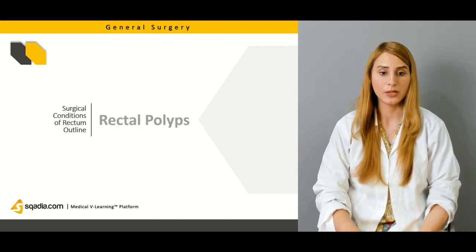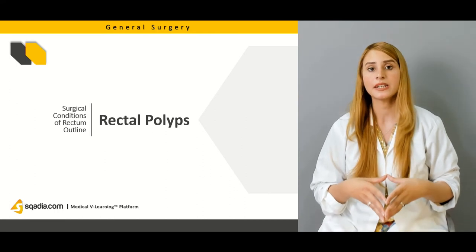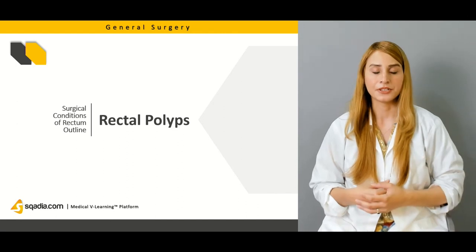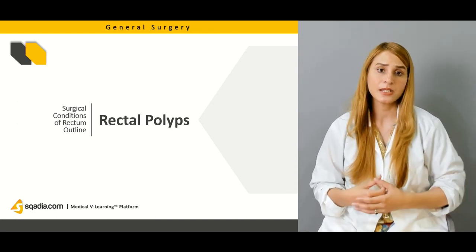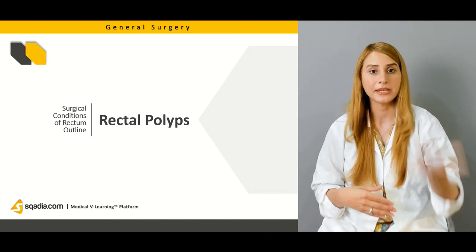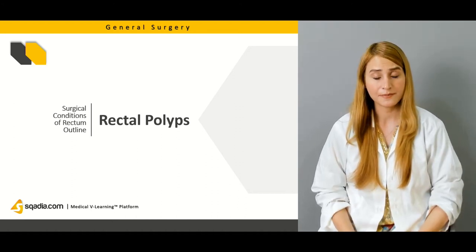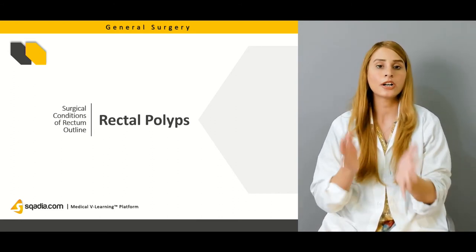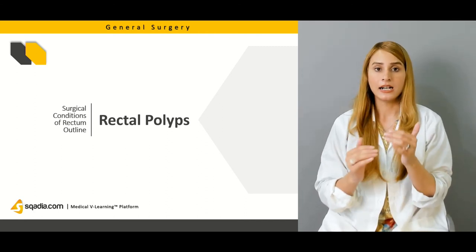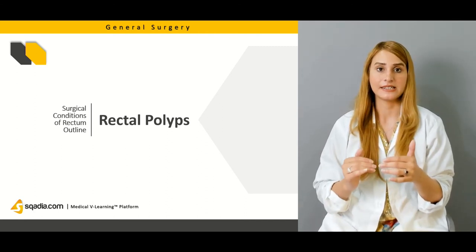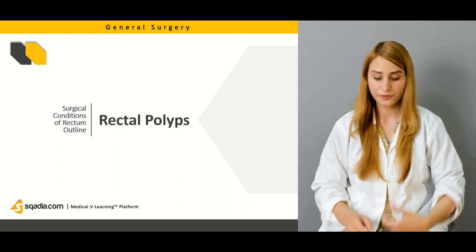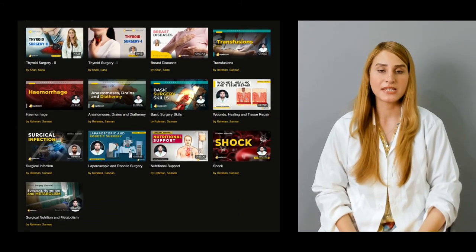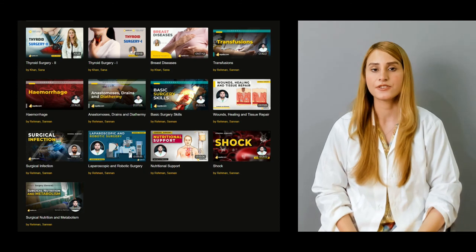Rectal polyps are very common in children. Types include simple adenomas, tubular polyps, hyperplastic polyps, hamartomatous polyps, and inflammatory polyps. Some polyps — such as tubular, villous, or hyperplastic types, especially those greater than one centimeter — have an increased chance of malignancy. We'll discuss all of these in detail. There are other lectures available on our website, Scardia.com, under the general surgery course.